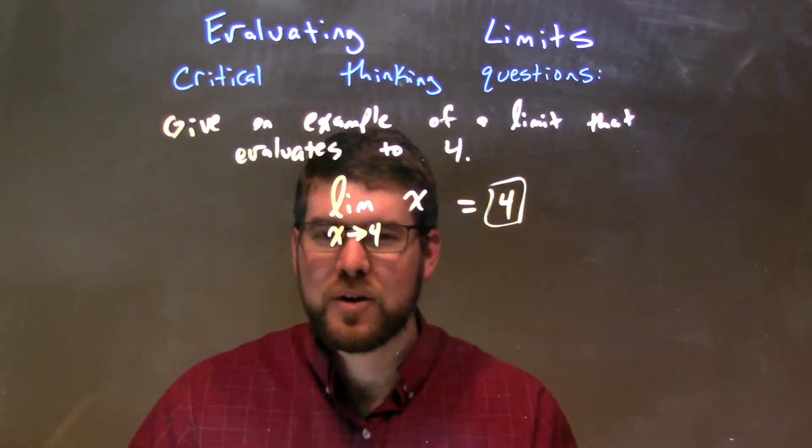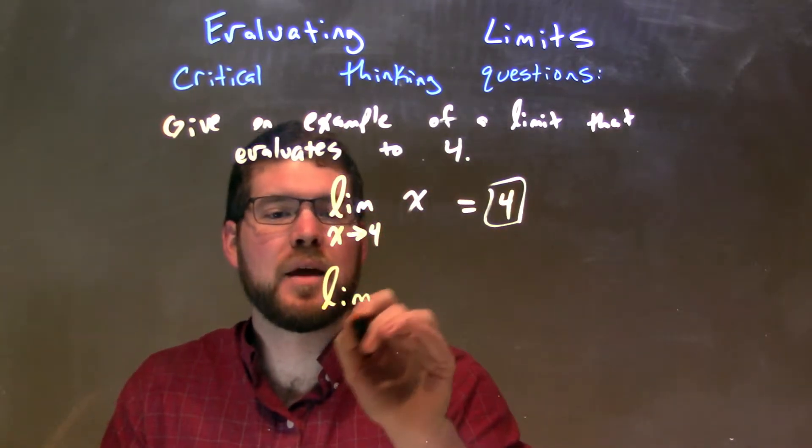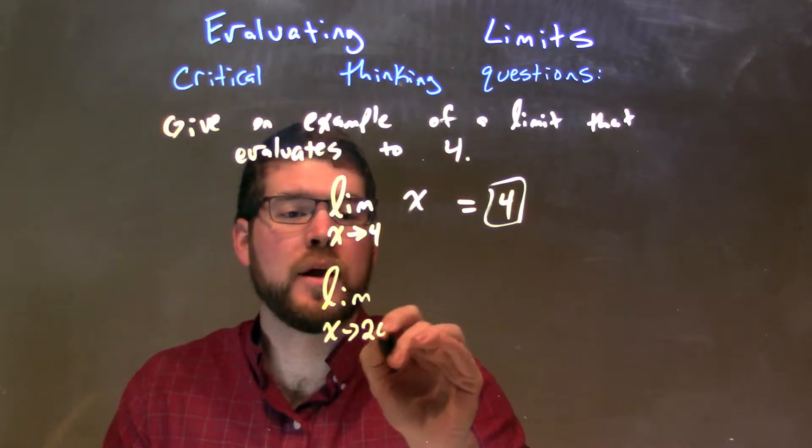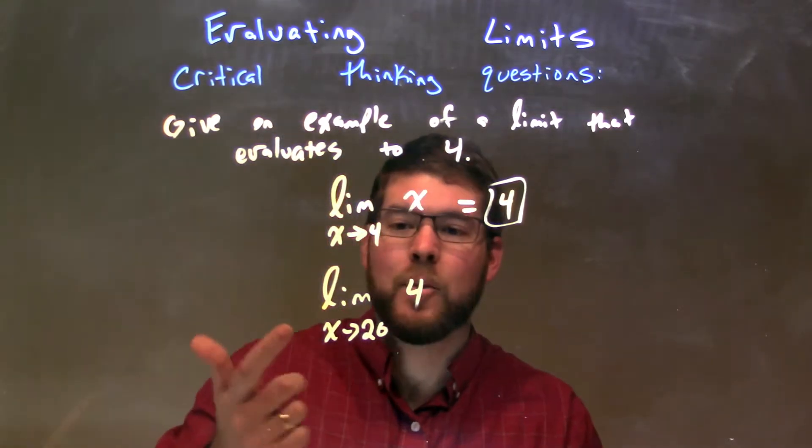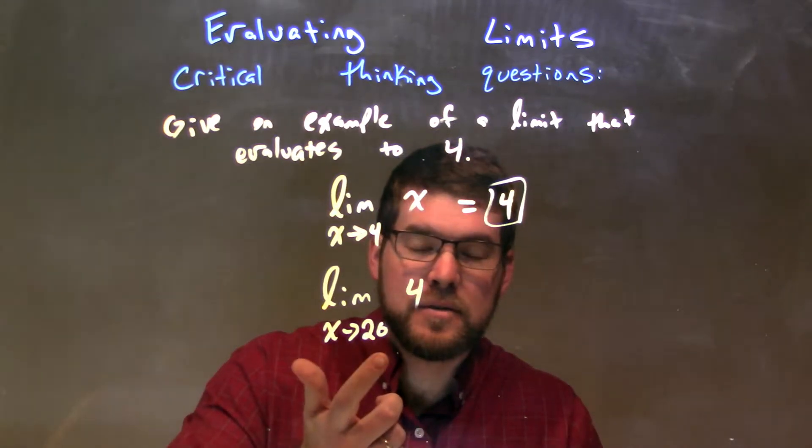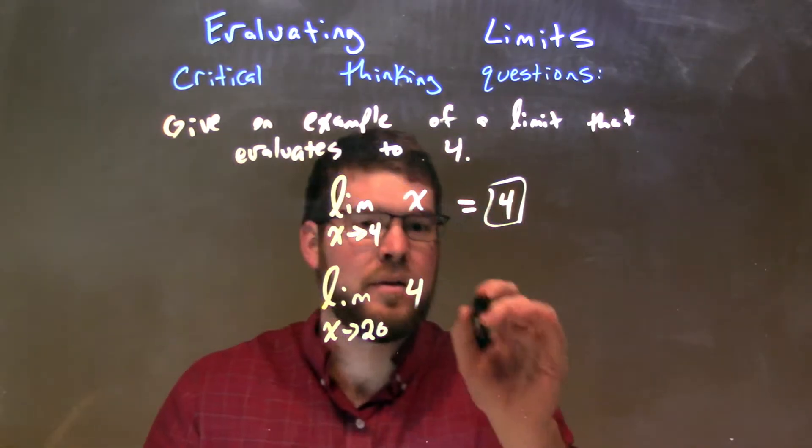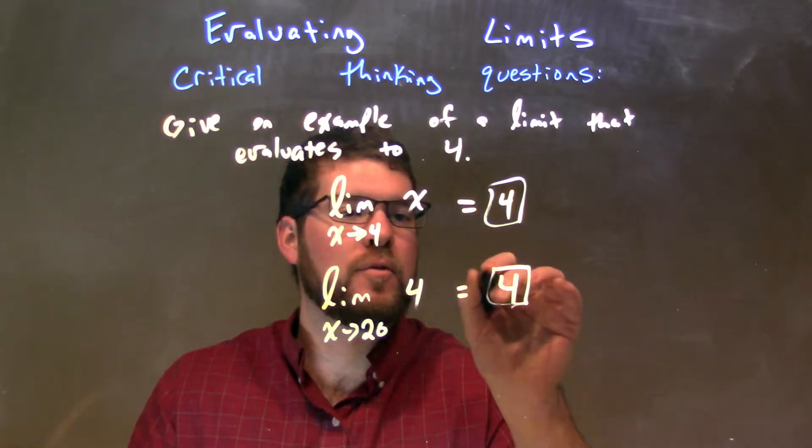Pretty simple. We also could do the limit as x approaches, let's say, 20 of the constant which is 4. Well, it doesn't really matter what we're taking the limit as x approaches here. That constant is always going to be the value itself, and it is also equal to 4.